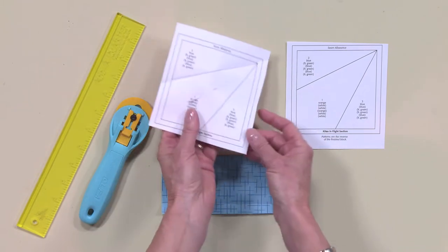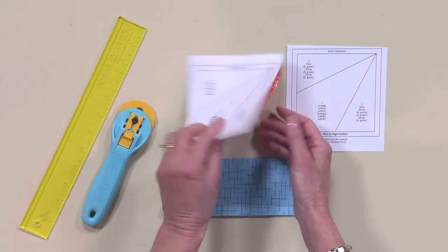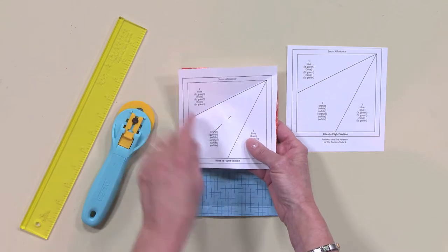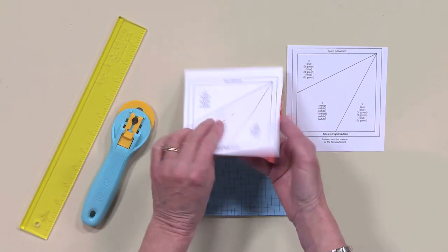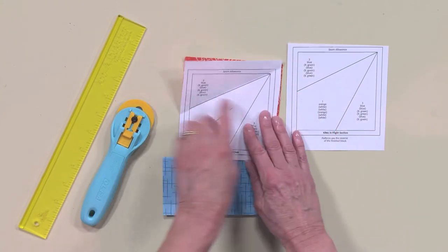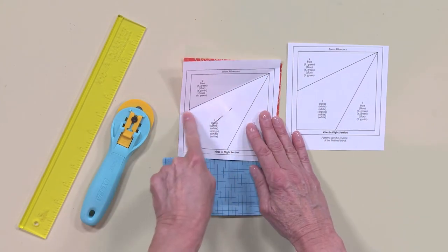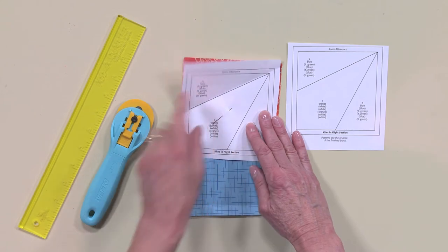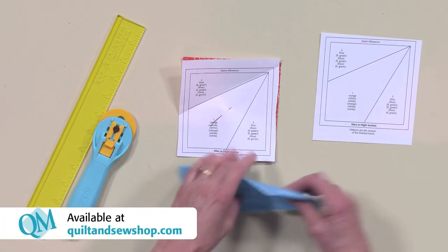So right now, I've got the orange square pinned to the back of the foundation in place where number one is going to go, making sure that it covers all of the seams. And then what I'm going to do is actually trim the fabric along the line between number one and number two, and I'm going to use the add a quarter ruler to do that.